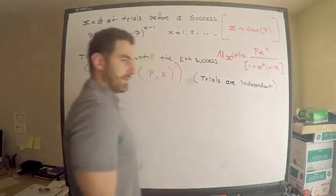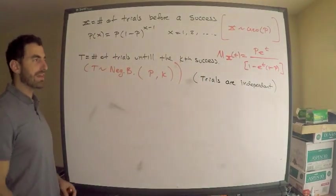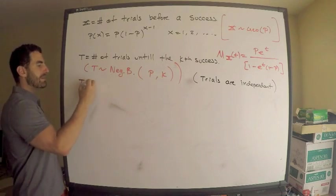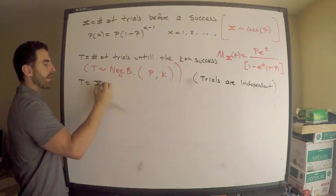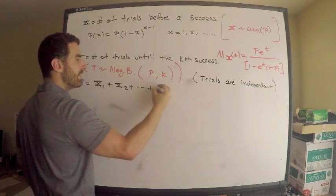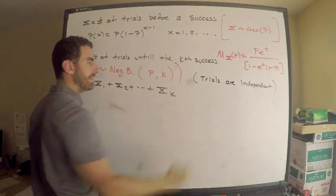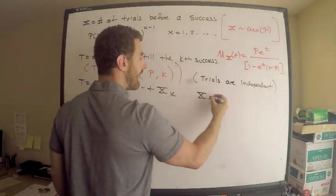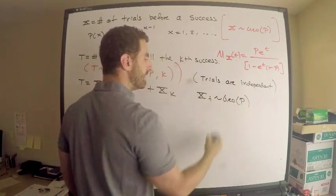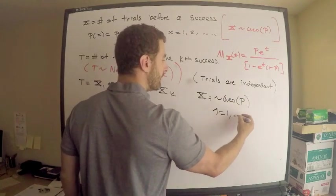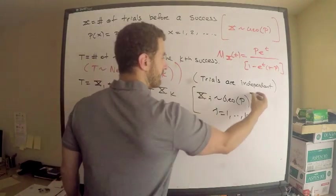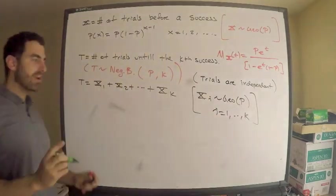We absolutely need that independence, because I'm going to use that fact right now. I claim that T is equal to X1 plus X2 plus all the way up to Xk, where each Xi is geometric with parameter p, for i equals 1 to k.